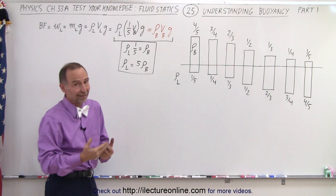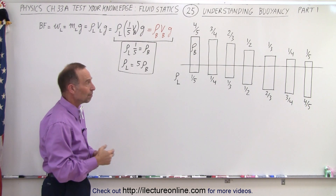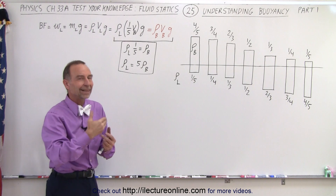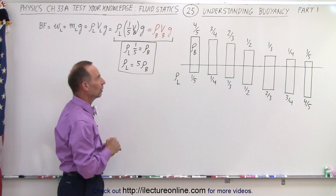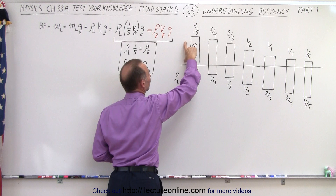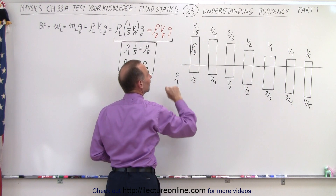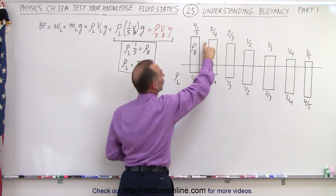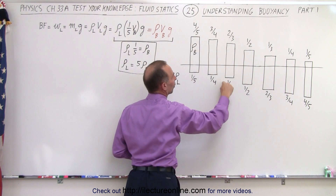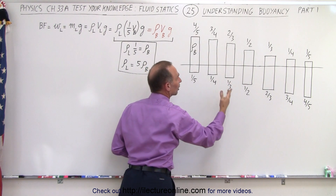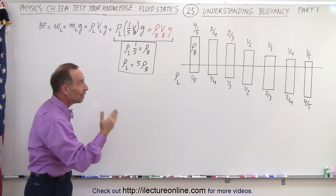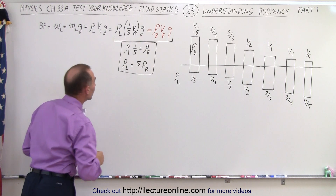The greater the density, the heavier the block is going to be. But in all cases, the density of the block is going to be less than the density of the liquid. In this case, we have four-fifths of the block sticking out and one-fifth inside the liquid; three-quarters sticks out and one-quarter is inside the liquid; two-thirds sticks out and one-third is in the liquid, and so forth. Let's see if we can make a relationship between that.